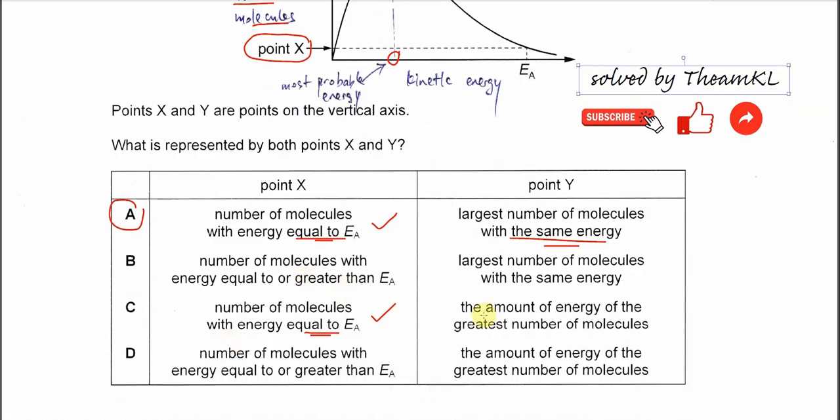So of course the answer is not C. The amount of energy is the largest number? No, this is not energy. So it's wrong. Okay, that's all. Thank you.